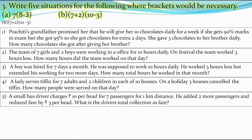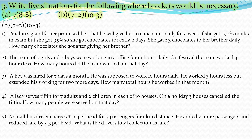The fifth situation: a small bus driver charges rupees 10 per head for 7 passengers per km distance. He added 2 more passengers, so we add 2 to 7. He reduced the fare by rupees 3 per head, so we subtract 3 from 10. What is the driver's total collection as fare? We put both expressions in brackets and multiply to get the answer. These are the 5 situations matching (7+2)×(10−3).